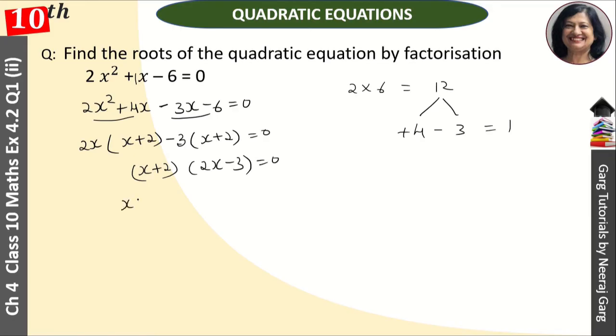It means x plus 2 is equal to 0, and x is equal to minus 2. And 2x minus 3 is equal to 0, and 2x is equal to 3. Then x is equal to 3 by 2.